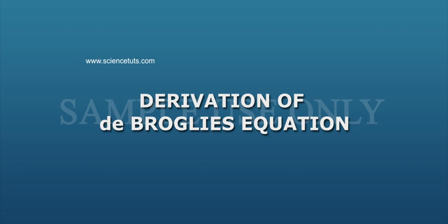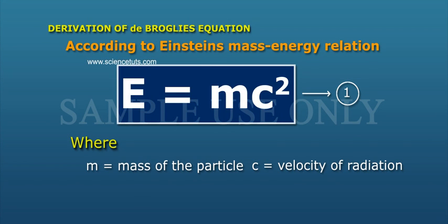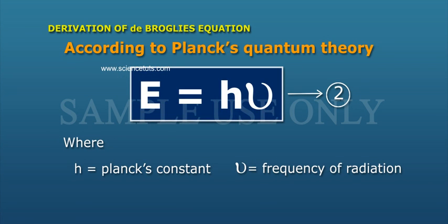Derivation of de Broglie's Equation. According to Einstein's Mass-Energy Relation, E is equal to MC square, Equation 1, where M is equal to Mass of Particle and C is equal to Velocity of Radiation.